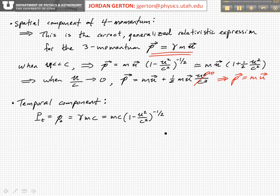Now what about the temporal component? The temporal component of the 4-momentum, which we sometimes designate as script lowercase p sub 0 or p naught, is equal to gamma mc.